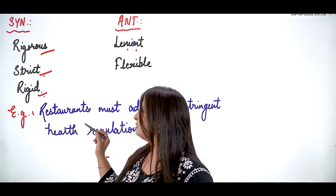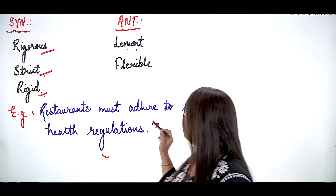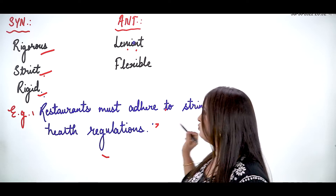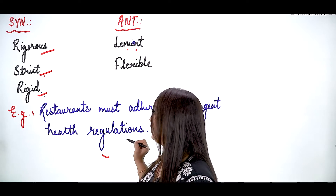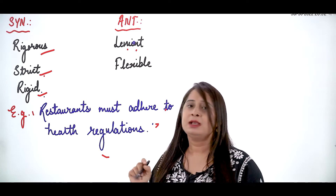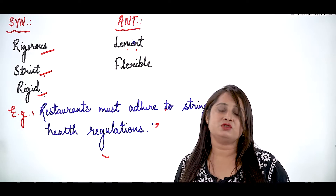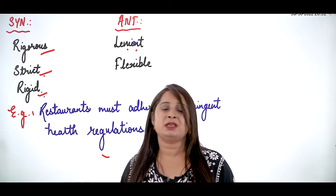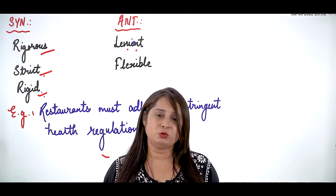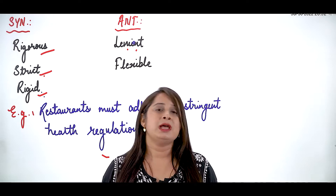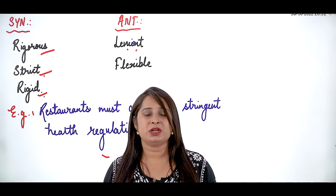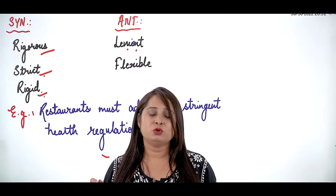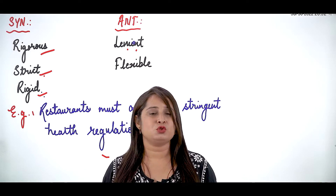Example sentence: restaurants must adhere to stringent health regulations. Health regulations are made so that you can get good, hygienic food and the restaurant area can be maintained well.